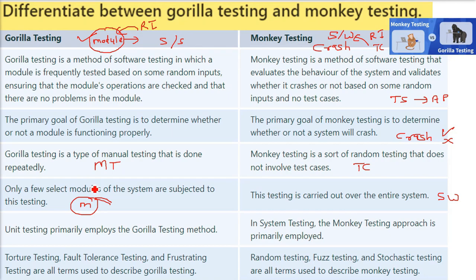A module can be a group of classes or even one function or a group of functions. Unit testing is what we employ in gorilla testing because testing of a component or module is called unit testing, done by the developer.